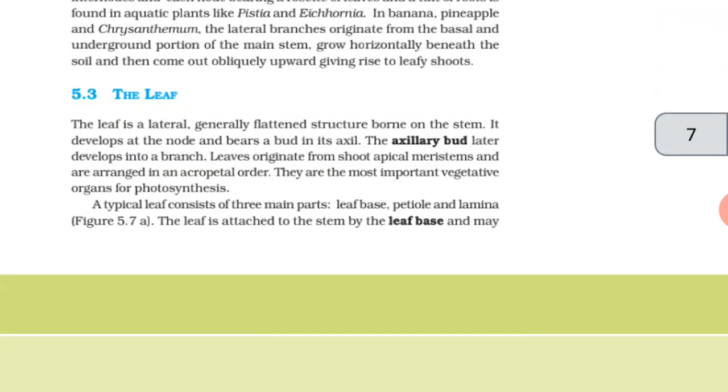The leaf. The leaf is a lateral generally flattened structure born on the stem. It develops at the node and bears a bud in its axil. The axillary bud later develops into a branch. Leaves originate from shoot apical meristem and are arranged in an acropetal order.